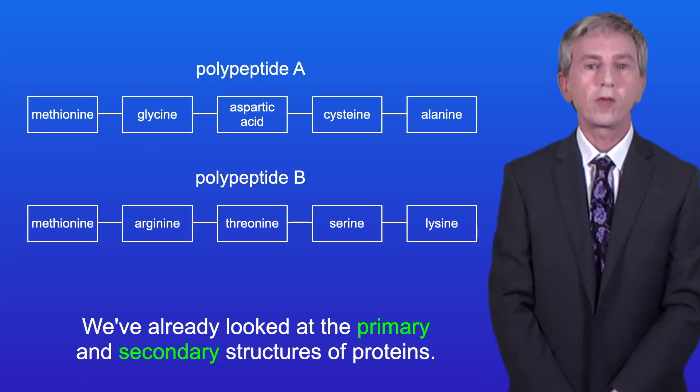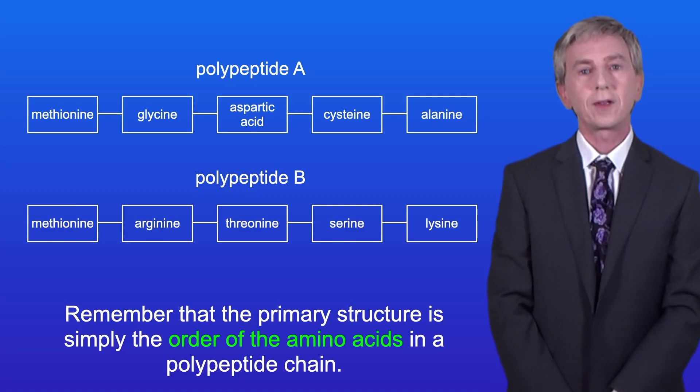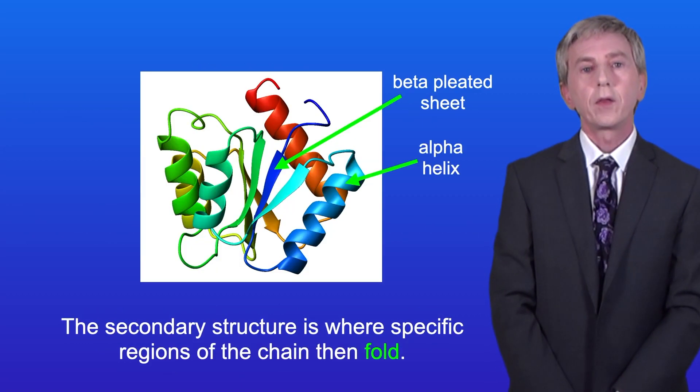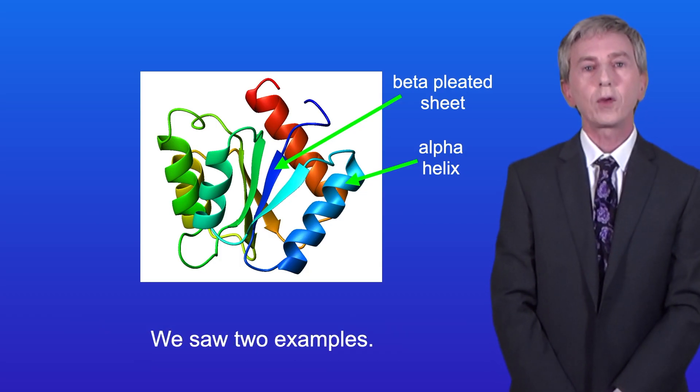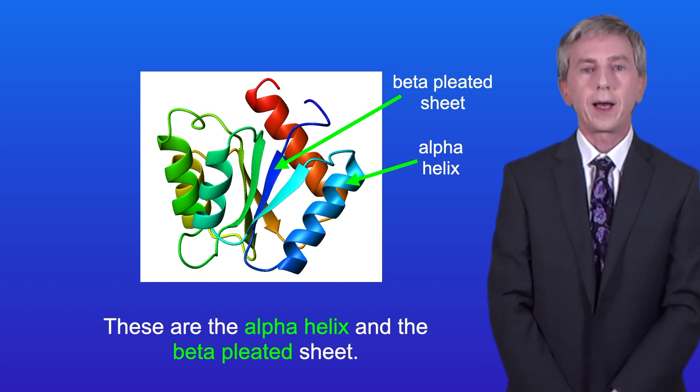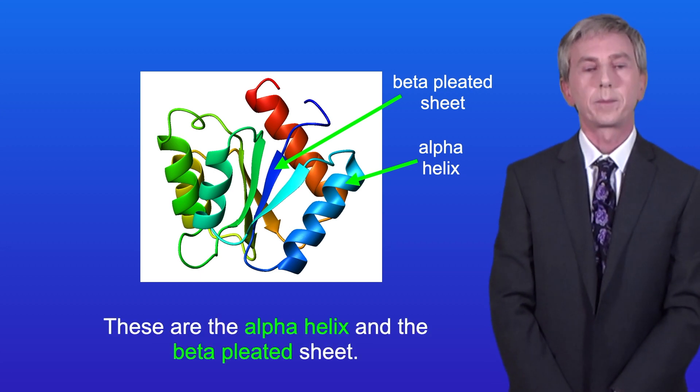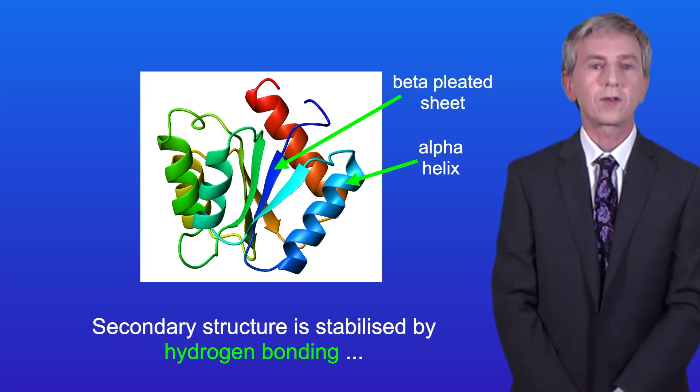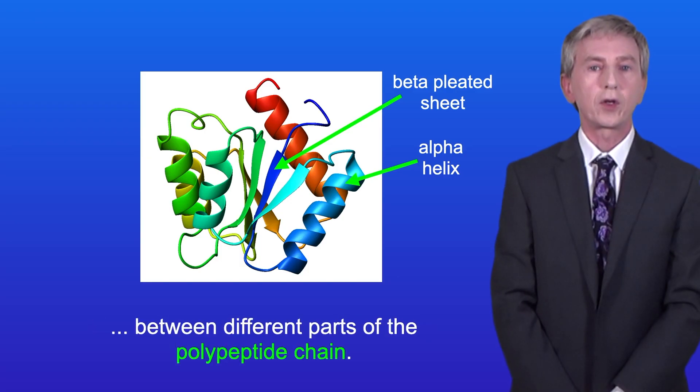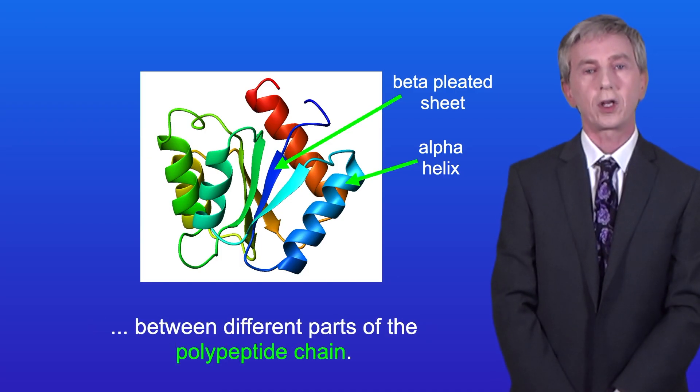We've already looked at the primary and secondary structures of proteins. Remember that the primary structure is simply the order of amino acids in a polypeptide chain. The secondary structure is where specific regions of the chain fold, and we saw two examples: the alpha helix and the beta pleated sheet. The secondary structure formed depends on the amino acids present and is stabilized by hydrogen bonding between different parts of the polypeptide chain.